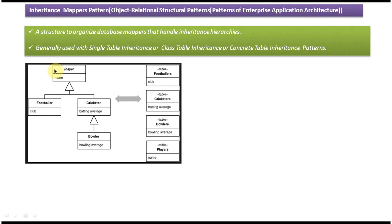Here you can see a Player superclass which has a name attribute. Footballer and Cricketer are subclasses — Footballer has a club attribute and Cricketer has a batting average attribute. Footballer extends Player. This is the inheritance hierarchy.